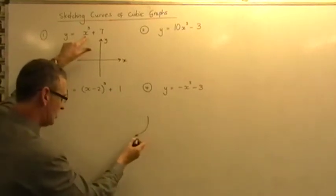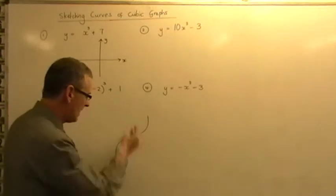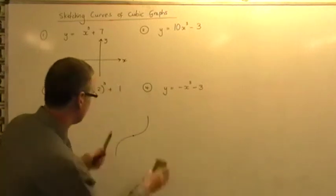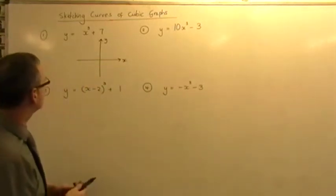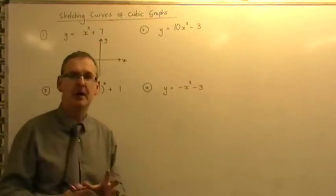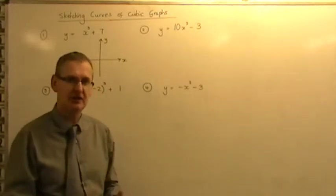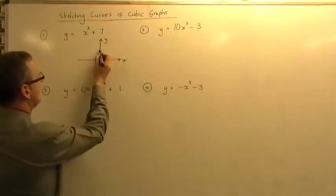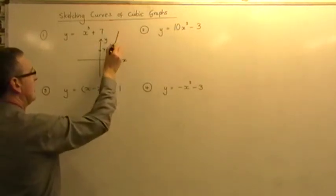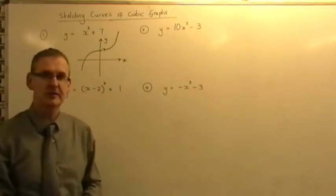Remember the basic x cubed curve looks something like that, and it's located where that point there is smack on the center of the crosswire. Based on knowing that is the basic shape of an x cubed curve, we now just see that we have a plus 7 on the end. The plus 7 simply shifts that x cubed curve up 7 places. So I'm going to mark on plus 7 on the y axis and simply draw in my x cubed curve in that position. And that's y equals x cubed plus 7.